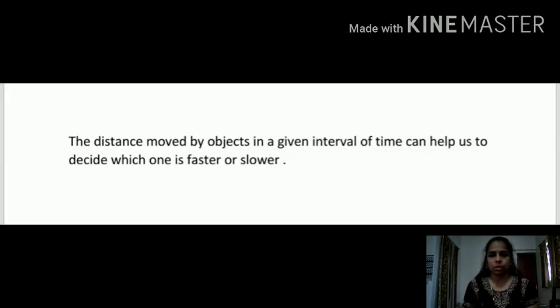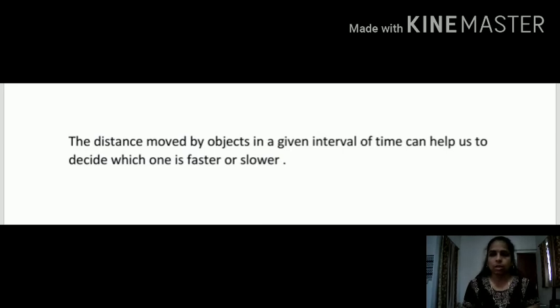We can say that the distance moved by objects in a given interval of time can help us decide which one is faster or slower. Suppose you start pedaling your bicycle at the same time as the bus begins to move. After 5 minutes, the distance covered by the bus and the distance covered by you will not be the same — definitely, the distance covered by bicycle after 5 minutes would be much smaller than the distance covered by the bus. So we can say that the bus is moving faster than the bicycle. Even the same vehicle may move slow at one time and fast at another — for example, if the road is busy the bus will move slow, and if the road is clear the bus will move fast.